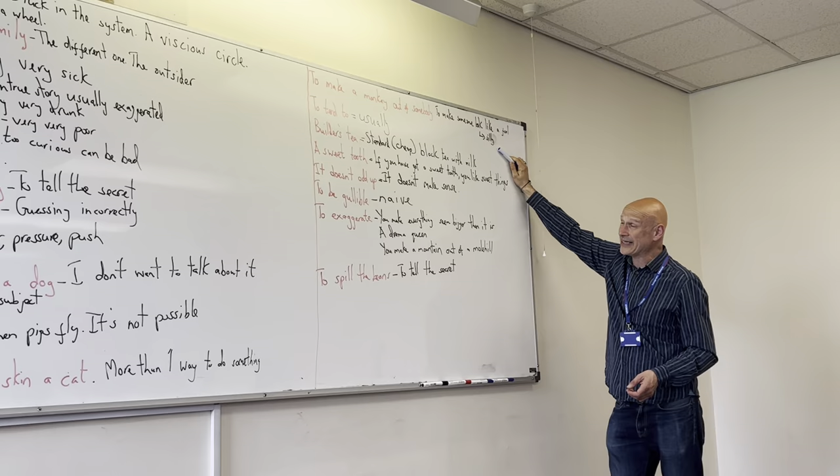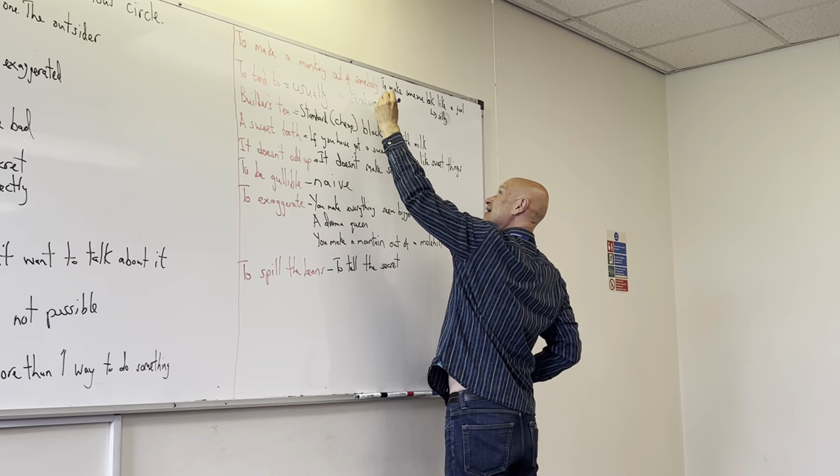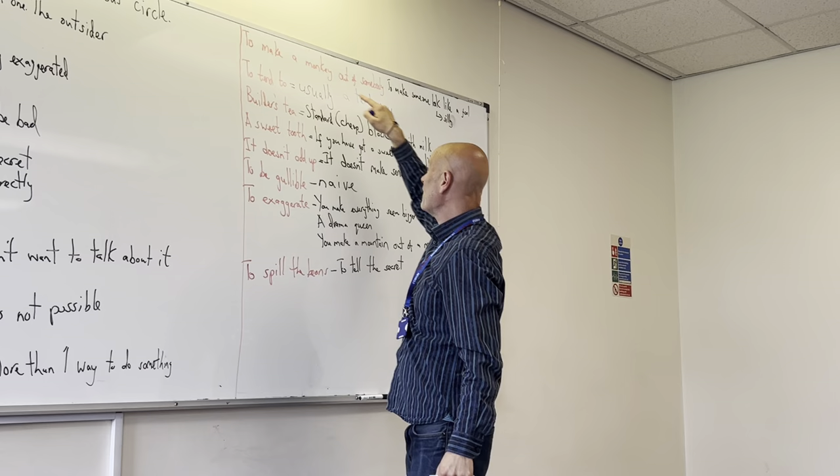If you tend to do something, it means you usually do something. And somebody used this word, a tendency. You have a tendency to do something. So, this is the verb and this is the noun of that verb.